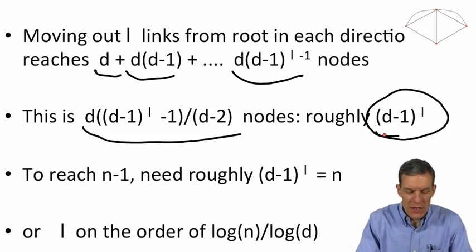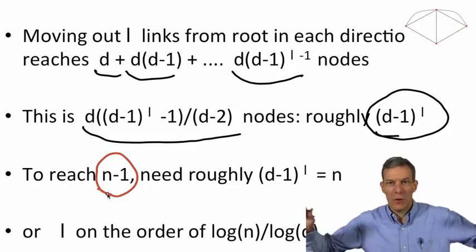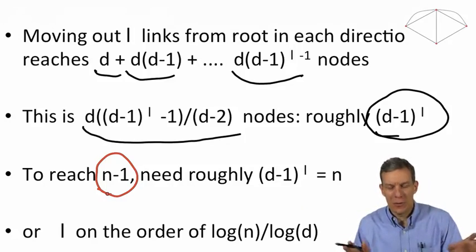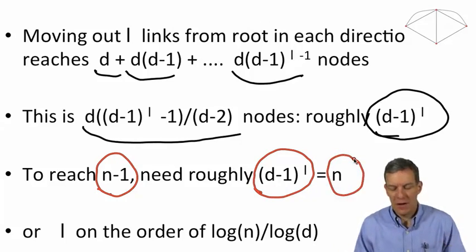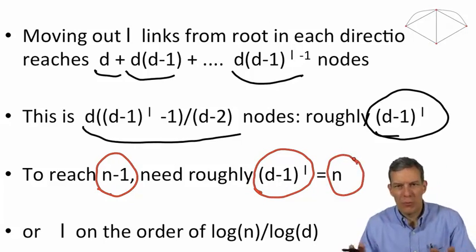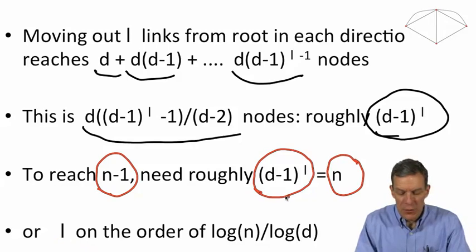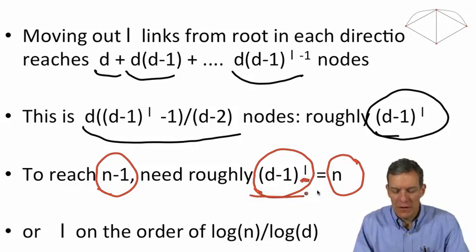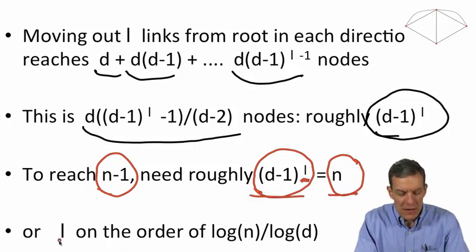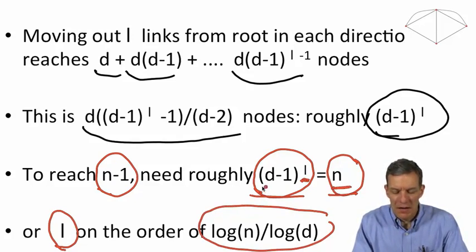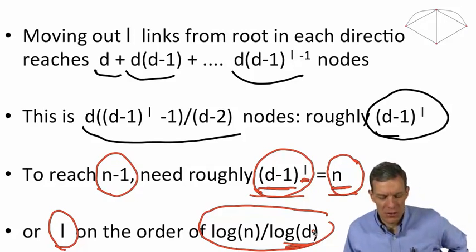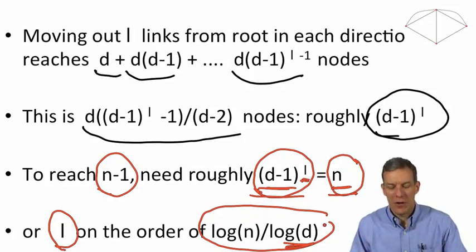So in order to reach, if we want to reach n minus one, the rest of all the nodes, how many steps do we have to go out until we've reached that many? Well, we need d minus one to the L to be equal to n, roughly, or n minus one. So these are approximate calculations. So if we solve this for L, we can take a log of both sides of this equation. What we get is that the L that solves this equation has to be on the order of log n over log of d minus one, which is basically going to be similar to log of d if d is reasonably large. So we end up with L on the order of log n over log d.